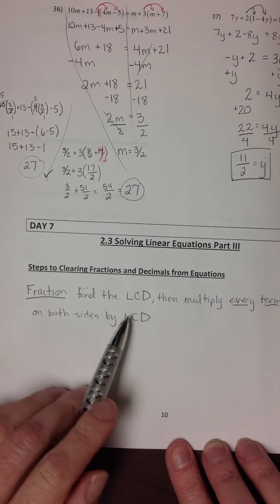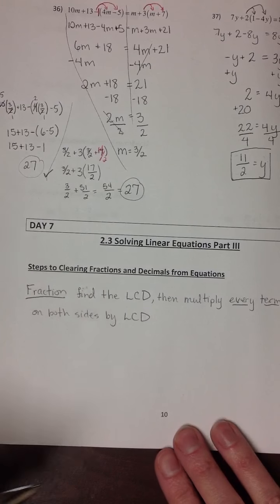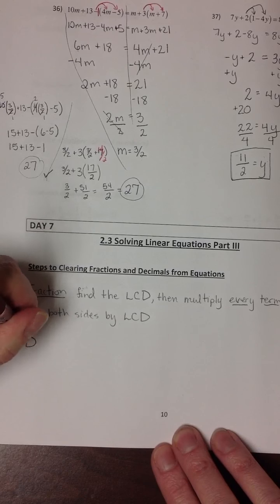When we reduce the fractions created by multiplying by that lowest common denominator, the fractions will just fall away. Similarly,